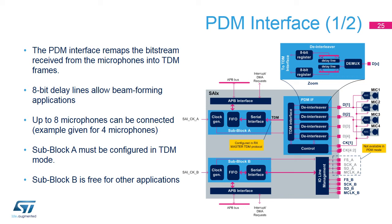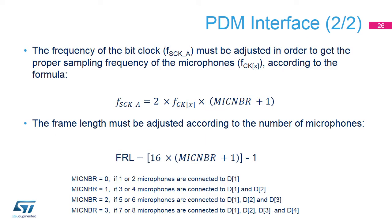The figure shows an example of connection of four digital microphones. Note that each data line, D1, D2, D3, or D4, can be connected to one or two digital microphones. Sub-block B is still available for other applications, and can be used to connect an external device using TDM, PCM, I2S, or any other supported protocol. With this PDM interface, the bit clock frequency has to be adjusted according to the sampling frequency and the number of microphones. The frame length is also adjusted according to the number of connected microphones.